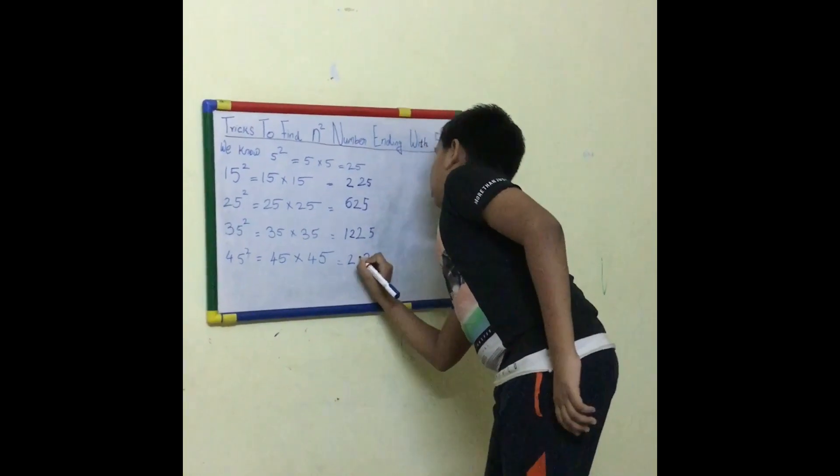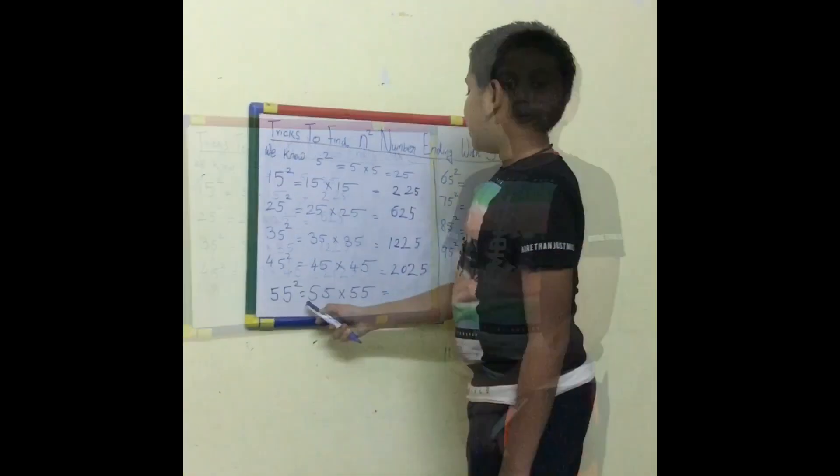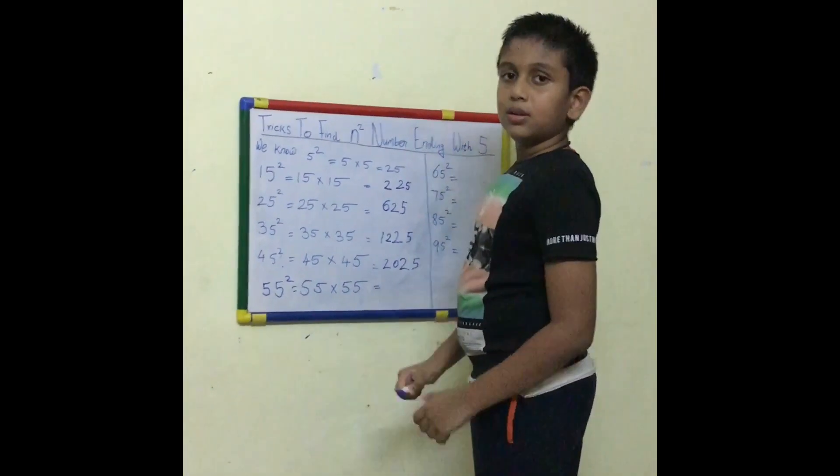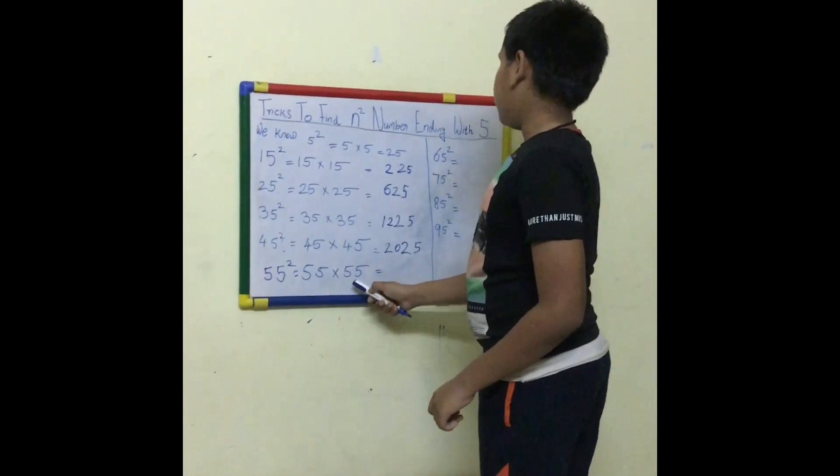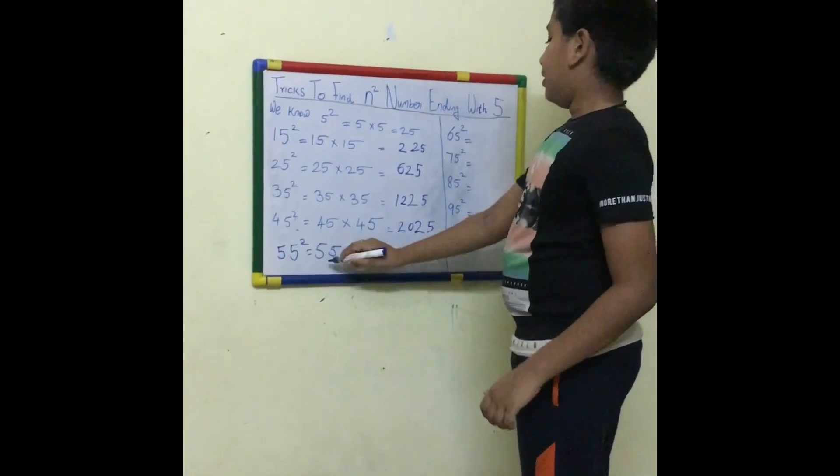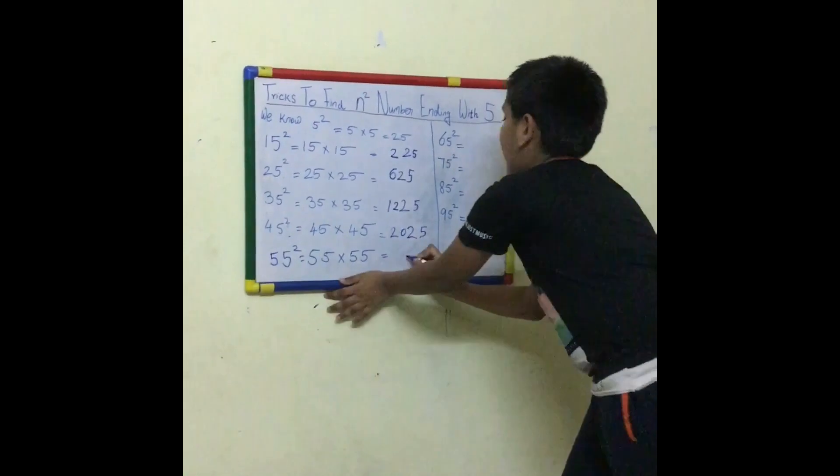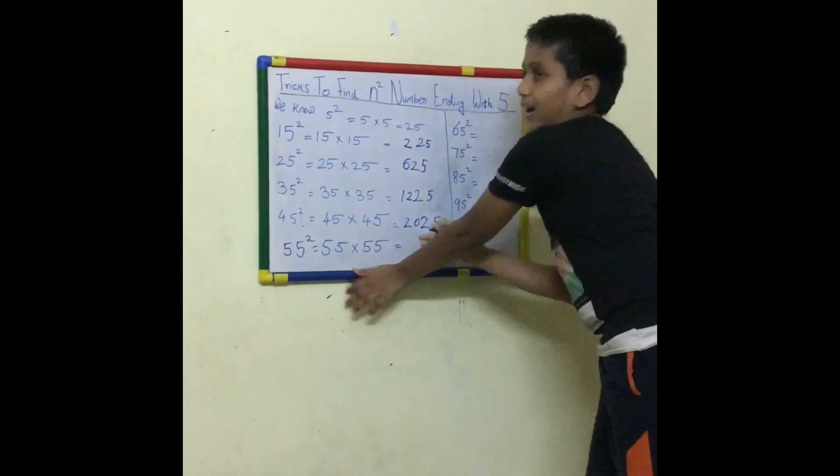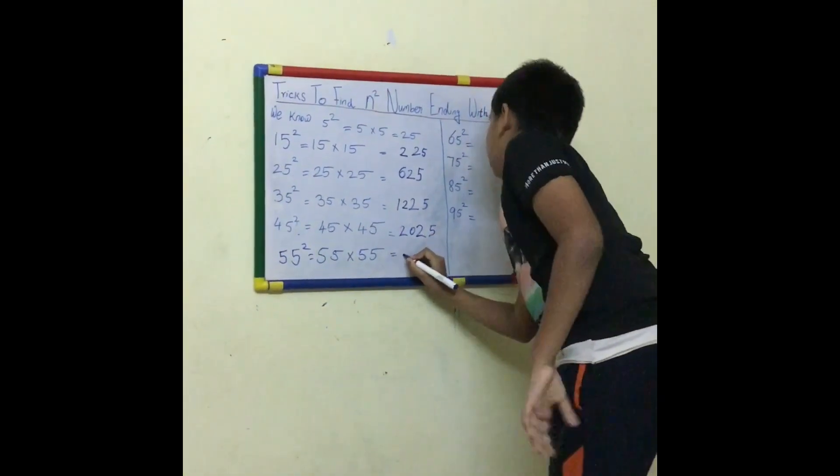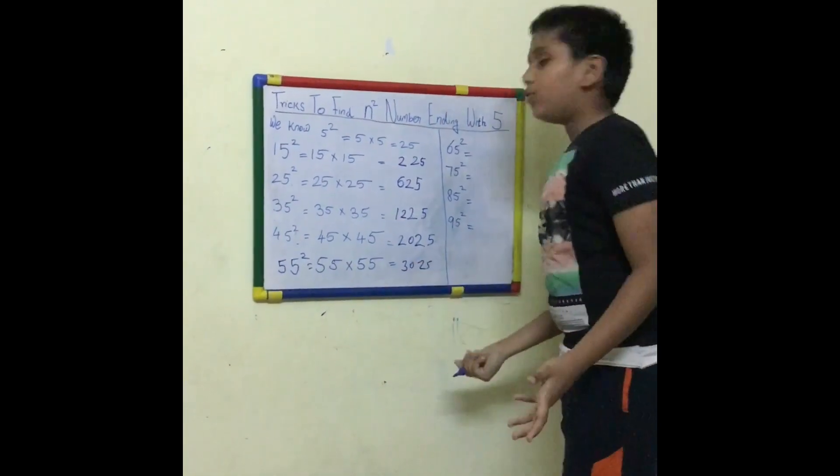So the answer is 2025. 55 squared equals 55 into 55. That means 5 into 5 is 25. Then 5 into 6 is 30. So 3025.